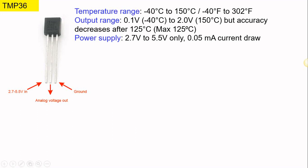According to the TMP36 datasheet, which you can obtain online, the temperature measured by this sensor ranges between minus 40°C to 150°C, or minus 40°F to 302°F. The voltage output produced by this sensor ranges between 0.1 volt to 2.0 volts, where 0.1V corresponds to minus 40°C and 2V corresponds to 150°C. The accuracy of this sensor decreases after 125°C, so the practical maximum temperature is 125°C.